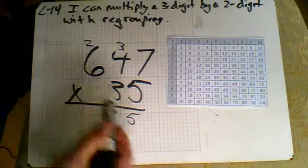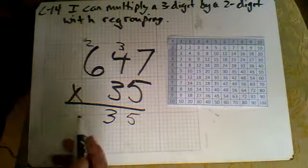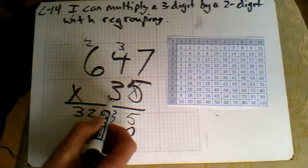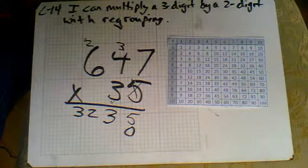And then we have 5 times 6 is 30, 31, 32. So we'll put a 32 there. Add a 0 because we're moving on to that next digit, aren't we, to the tens place.